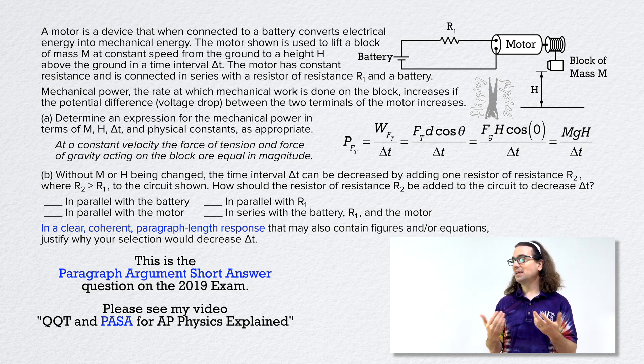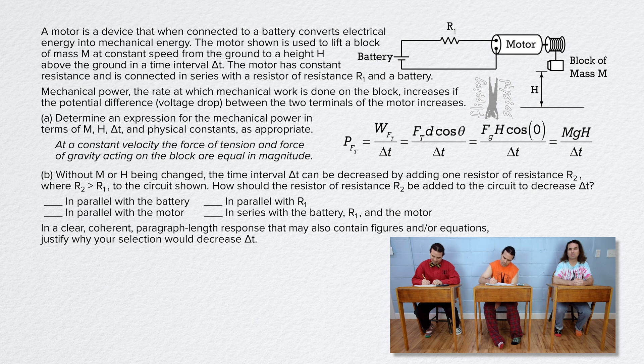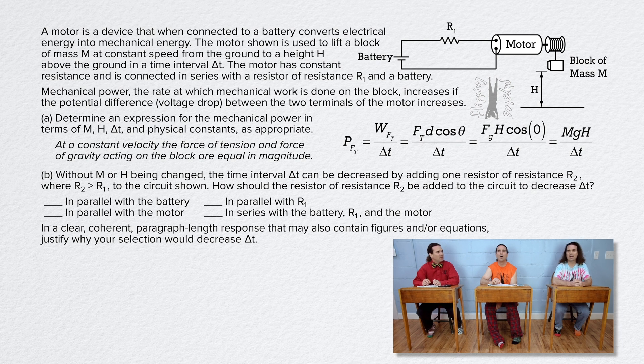Bo, please answer part B. Sure, Mr. P. The mass of the block and the height the block goes through both are the same as they were before. We need to add a resistor somewhere in the circuit to make delta t smaller. In other words, to make the block move faster, and that will take more power. Okay, I think I see it.